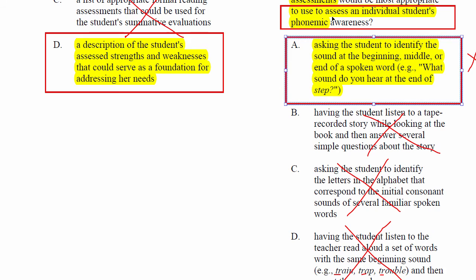Option A assesses whether the learner can identify initial, final, and medial sounds. If they get all of them, they're ready for a new set of instruction. If not, you know you'll have to dial the instruction back — for example, if the child isn't getting initial sounds, you've got to work on initial sounds. That's pretty straightforward.